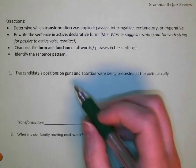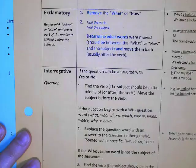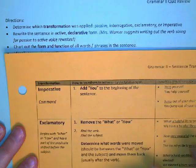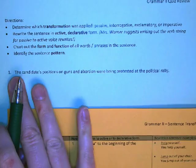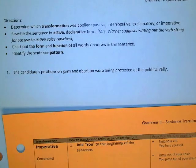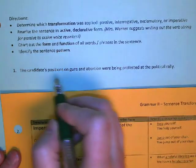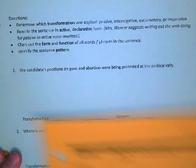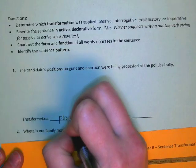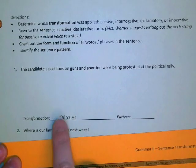The candidates' positions on guns and abortion were being protested at the political rally. We have to figure out what transformation was applied. Interrogative is easiest to find — there's going to be a question mark, and there's no question mark here. Exclamatory is the next easiest: it's going to start with a 'what' or 'how,' and it doesn't. Which leaves us with imperative — if you add 'you,' it'll sound like it's changing from a command to a statement of fact. Passive voice is the last one, and looking at the verb, it is passive voice.